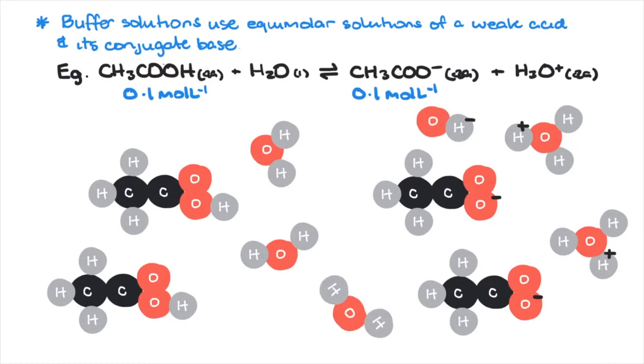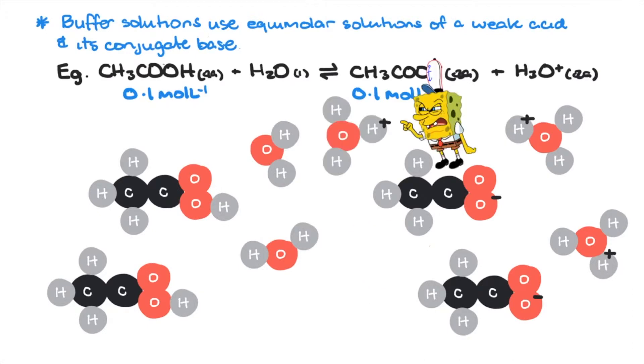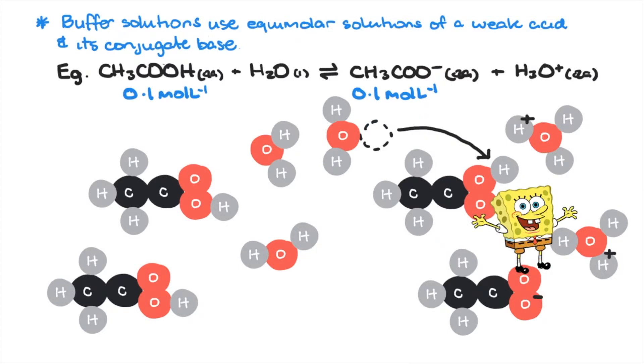If hydroxide is added to the solution which neutralizes your acid, the equilibrium shifts in the forward direction to make more hydronium ions, so pH remains relatively unchanged. If extra hydronium is added, equilibrium shifts in the reverse direction, so more of the acetic acid molecule is made to reduce the amount of hydronium ions. So pH is relatively unchanged again.